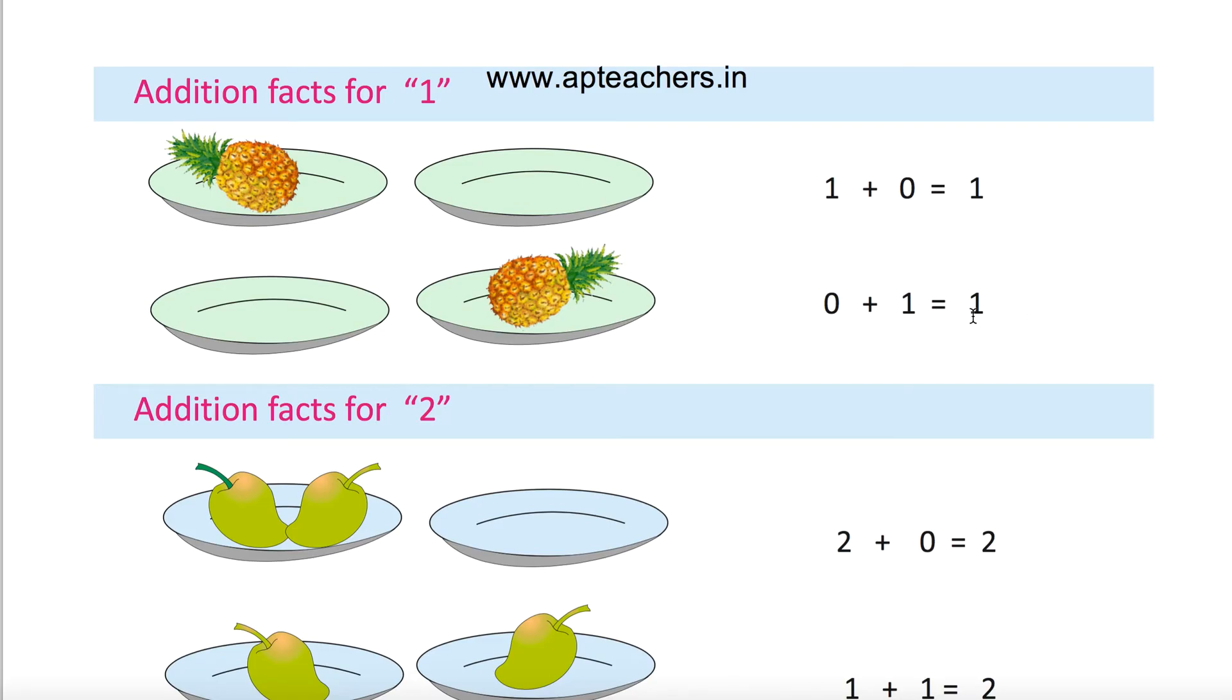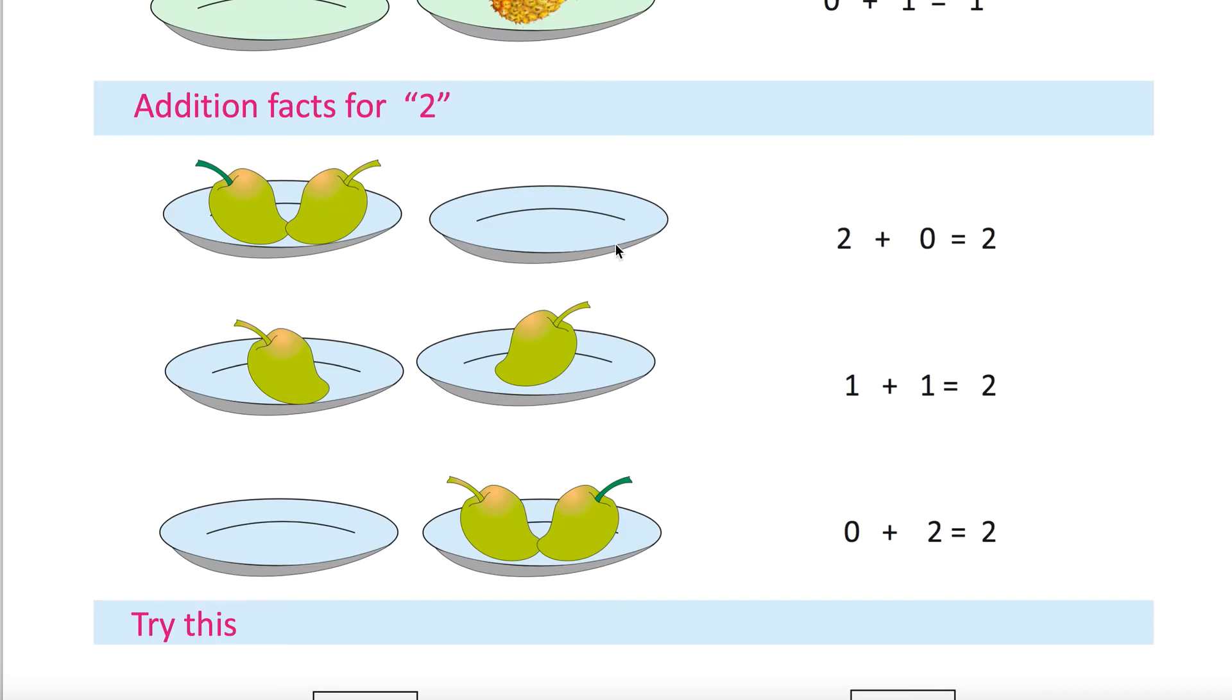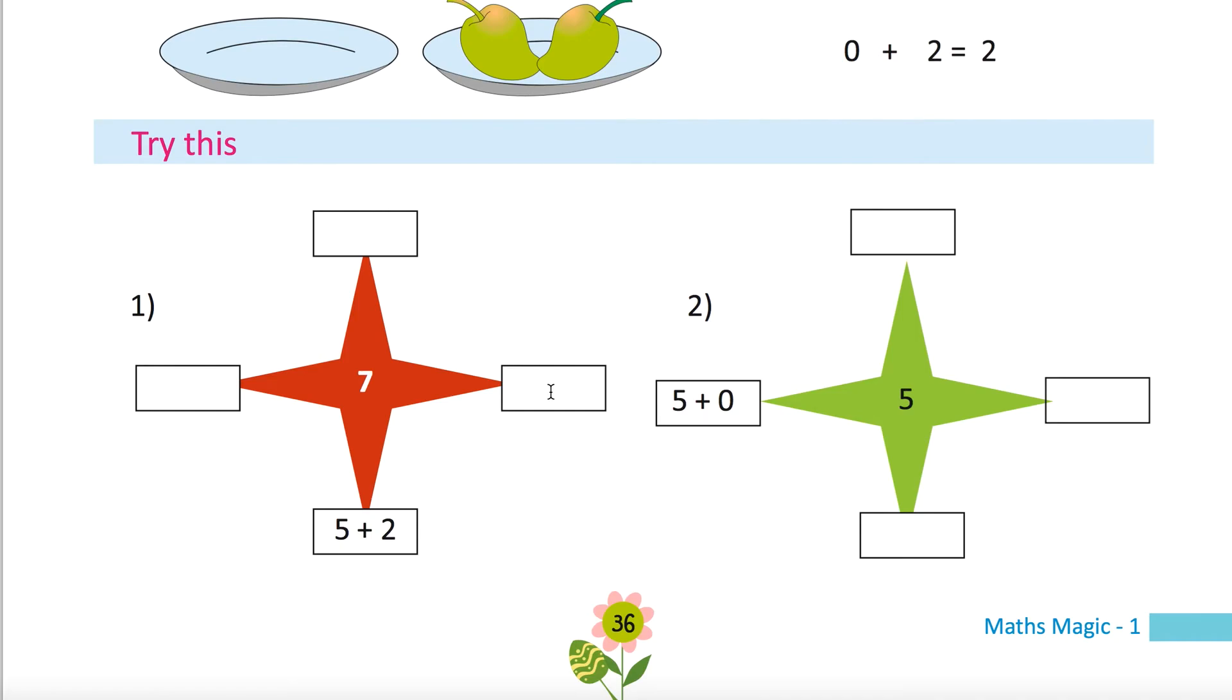Addition factors for one: one plus zero equals one, zero plus one equals one. Addition factors for two: two plus zero is two, one plus one is two, zero plus two equals two. Now you have to write the remaining things. Five plus two is seven. Four plus three also equals seven: five, four, three, two, one. So one plus six also equals seven. Five plus zero is five. Again, four plus one is five. Three plus two is five. What else is remaining? Two, one, two, three, two, three, four, five. One plus four is also five.